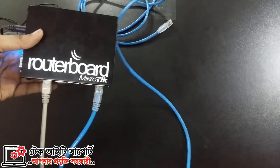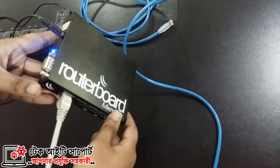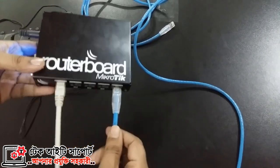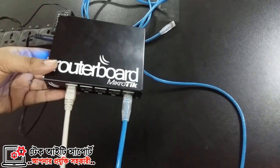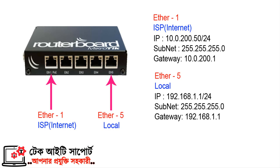We can use a computer connection. We can configure from this PC using a LAN cable, and we are going to go to the PC. Ether1 is connected to the ISP connection, so we are going to configure it with Ether1, the first port. We are going to get the IP address from the ISP.